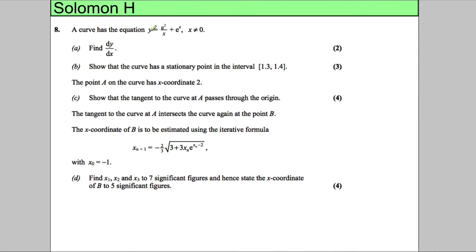In this question we've got an equation y equals e squared divided by x plus e to the power of x, and x can't be 0. Find dy/dx to start with. First things first, notice this is very important: e squared is just a number, it's not a function. So don't try using the quotient rule or something like that here — it's just a number, like 6 or something.